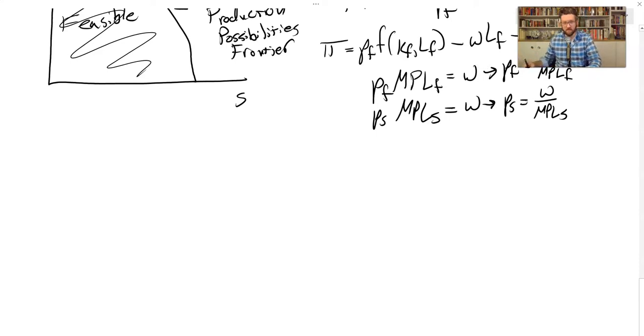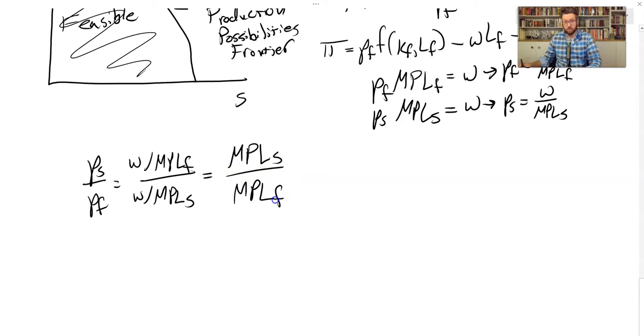Now, if we divide these by each other, we can get PS divided by PF is equal to the wage divided by the marginal product of labor for producing food, and so on. And that can be rewritten as the marginal product of labor for shelter over the marginal product of labor for producing food. So we attach a negative sign in front of food, and suddenly we've got the marginal rate of technical transformation is equal to this price ratio.